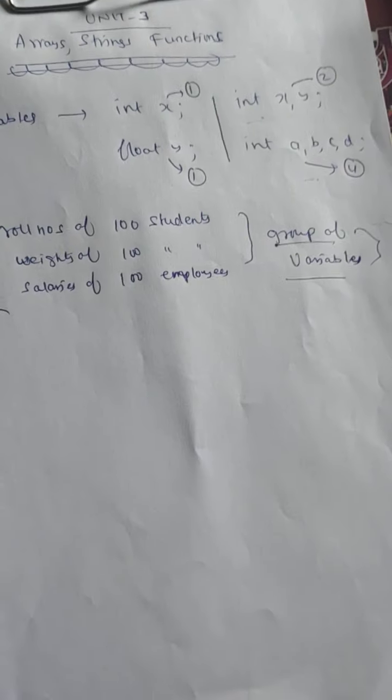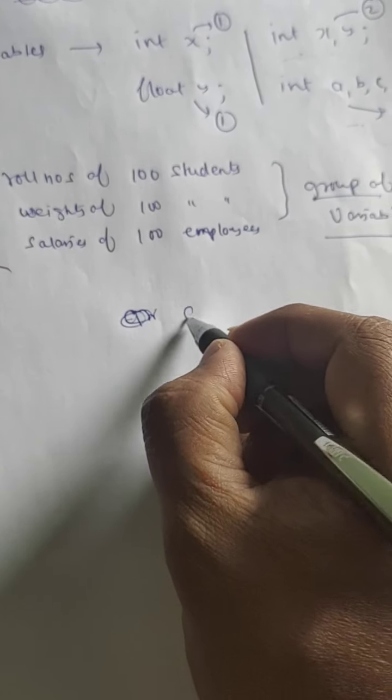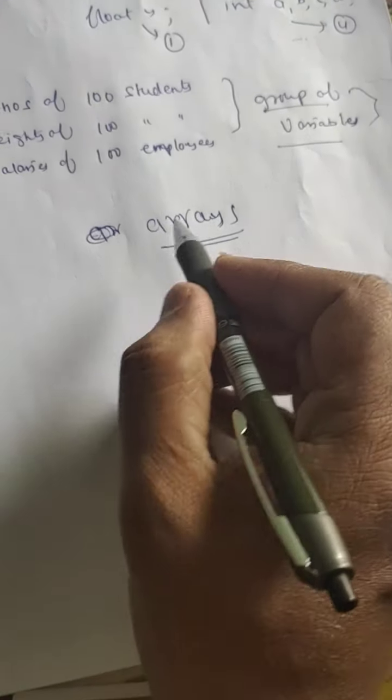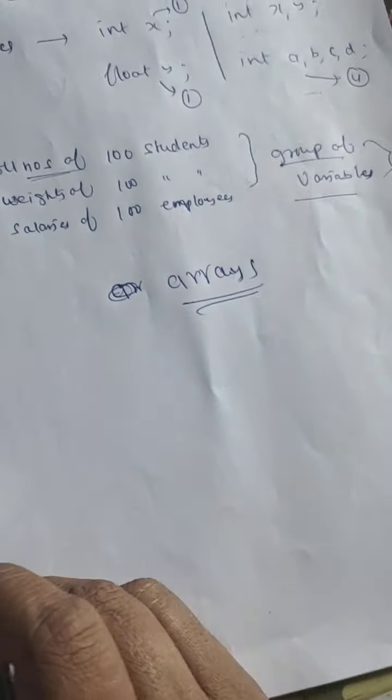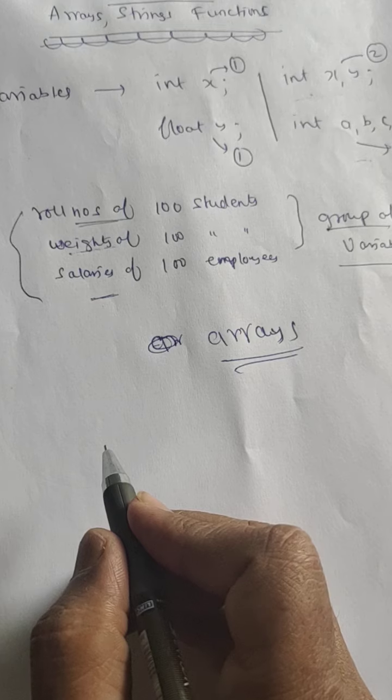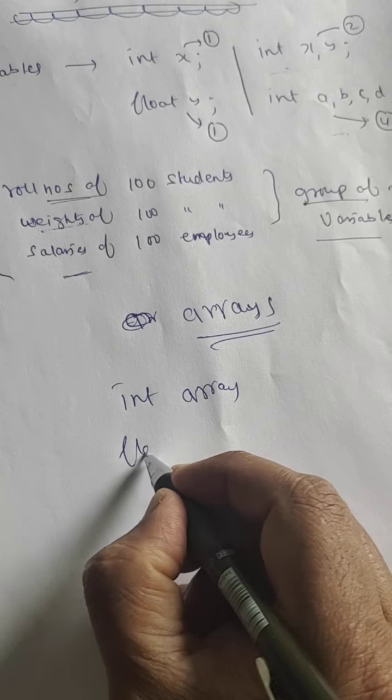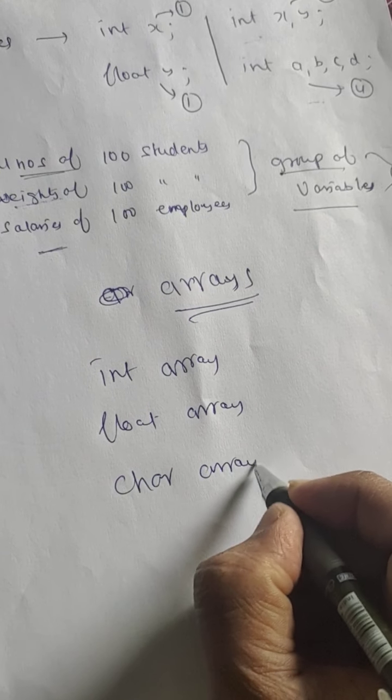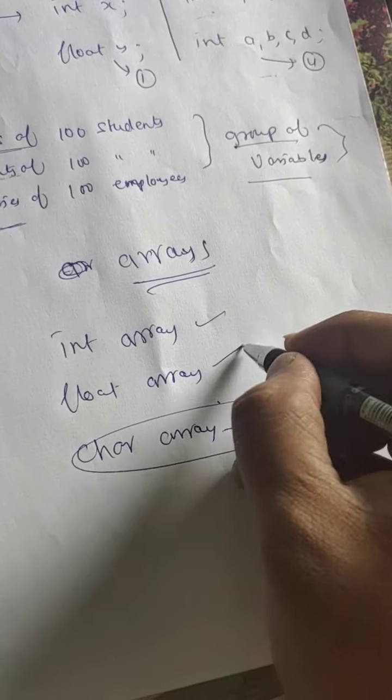That time single variable declarations are not enough. So that time we will use a concept called arrays. So there is a concept called arrays. Arrays are groups of variables - roll numbers means integer group, weights float group, salaries again float group. So like integer group means integer array, float group means float array, character group means character array. Character arrays are called strings.